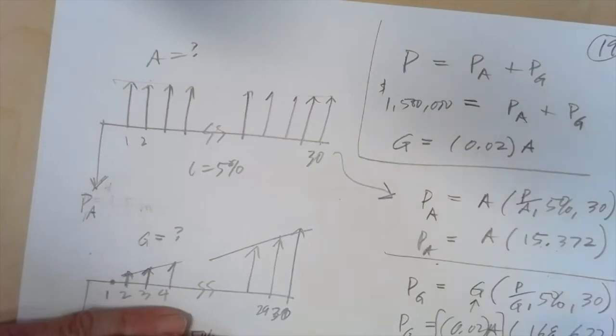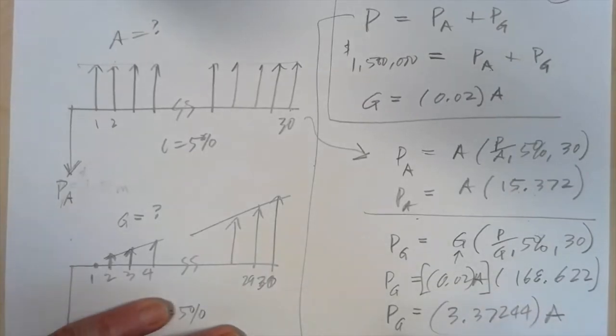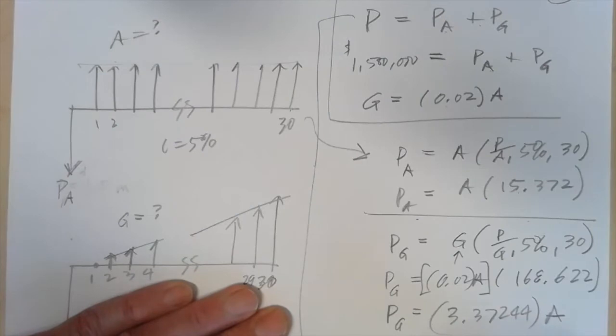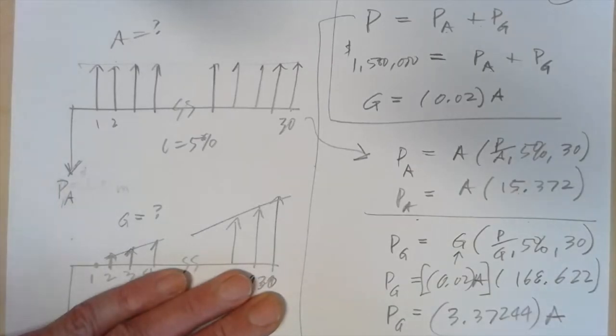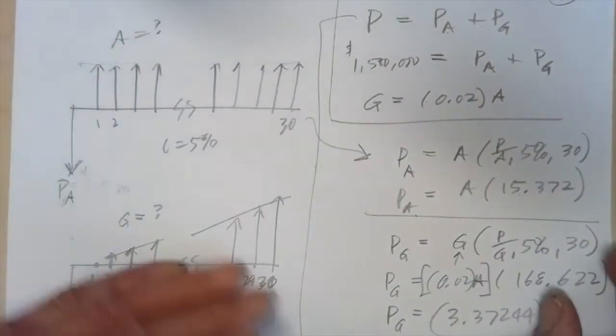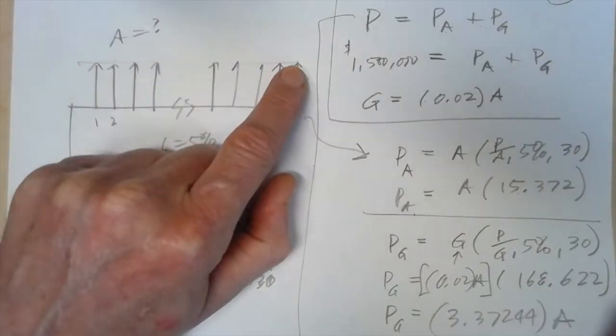So let's go back down here. My P is equal to P sub A plus P sub G, which is 15.372A plus 3.37244A. And so it's equal to 18.7444A. Now we'll go to the next page. And we're very close to calculating how much I can withdraw in the first year retirement and what the amount will be at the end of the 30th year.